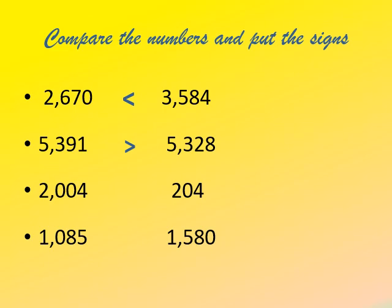In the third example, before comparing digit by digit, it's better to first count the number of digits. The number on the left is a 4-digit number and the number on the right is a 3-digit number. A 4-digit number is always greater than a 3-digit, 2-digit, or 1-digit number. So 2004 is greater than 204, and when you click, the answer appears with the mouth open towards the greater number.